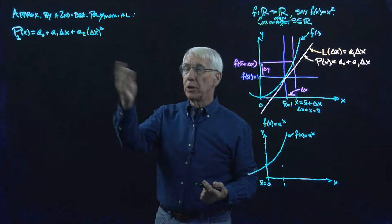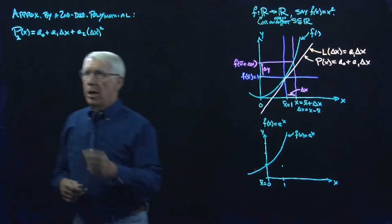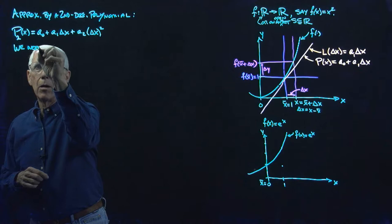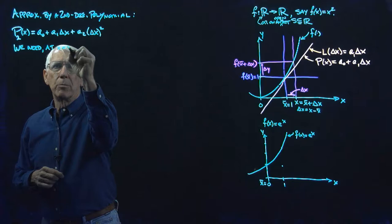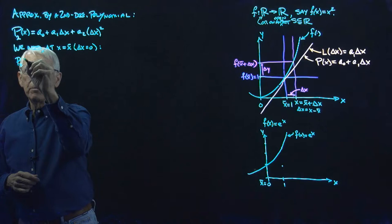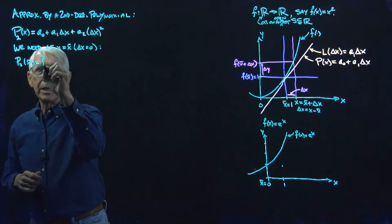That second-degree polynomial has this formula. Here I have x, here I have delta x, but delta x is x minus x-bar. Reproducing the approach we took for the first-degree polynomial: at x equals x-bar, which is delta x equals zero, what we want is p2 at x-bar equal to f at x-bar.